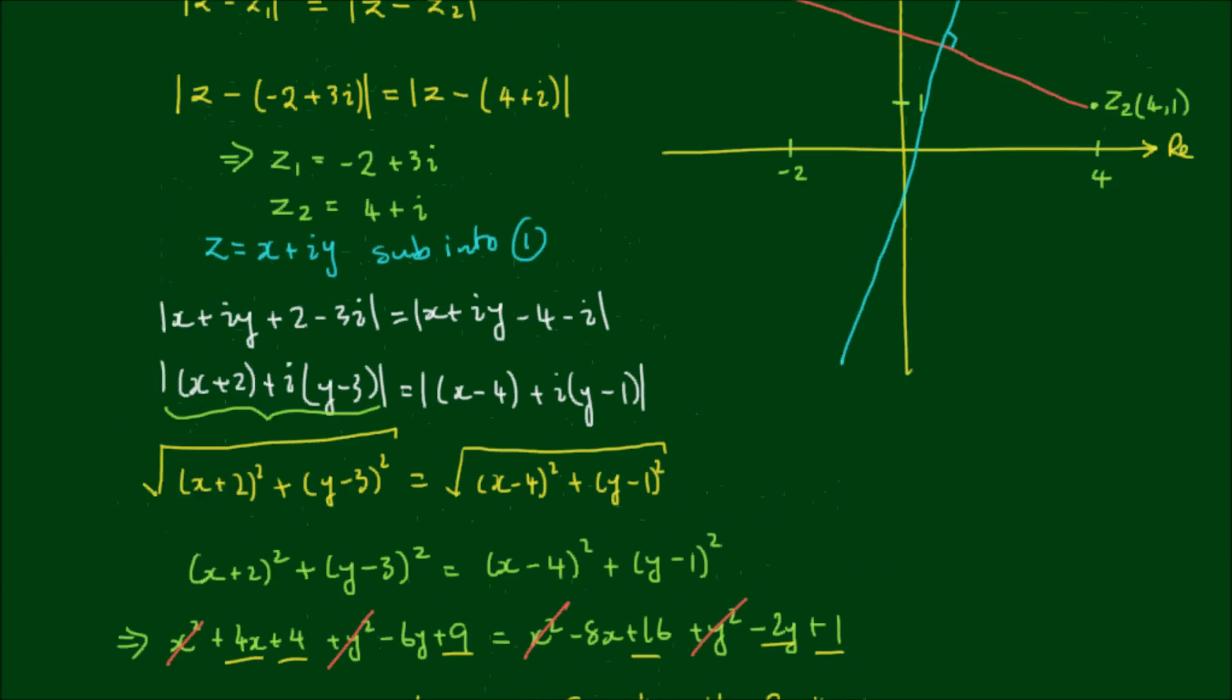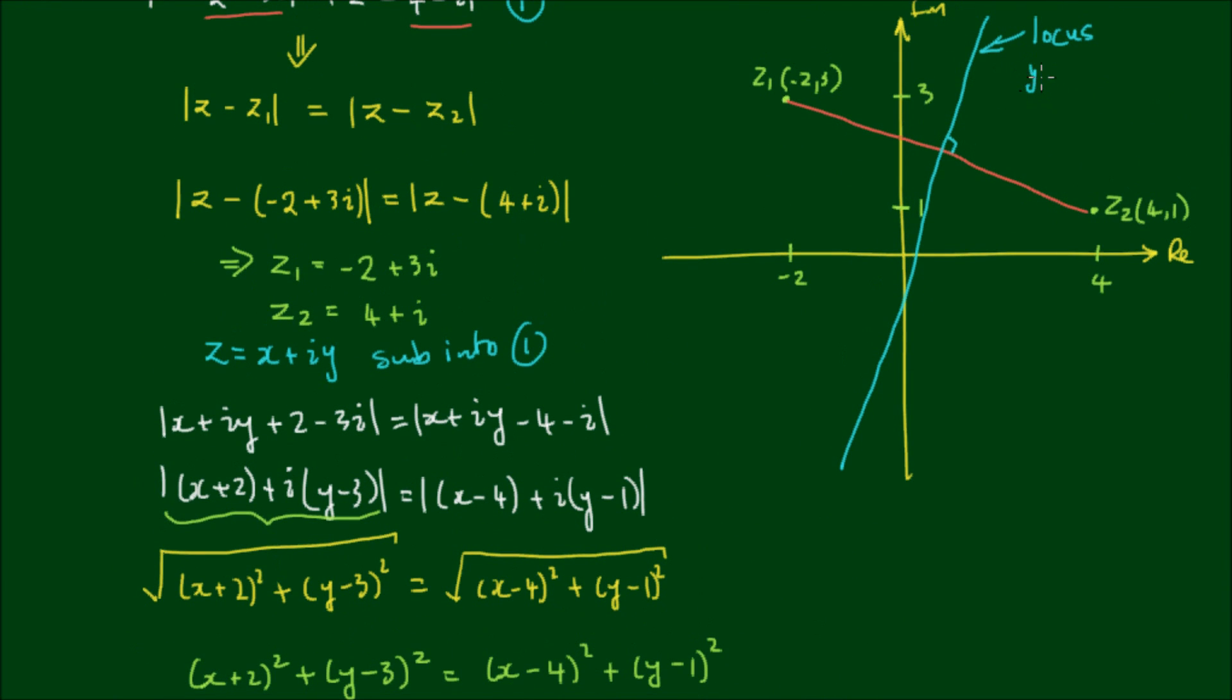So as we can see, the locus has an equation of y = 3x - 1, with -1 being the y-intercept.